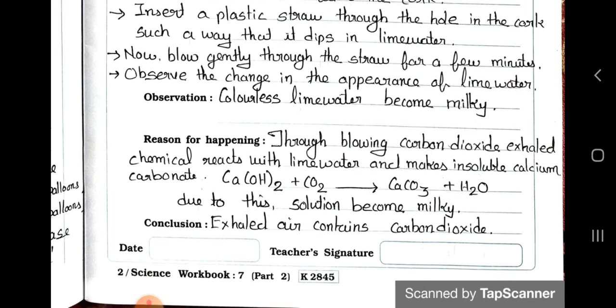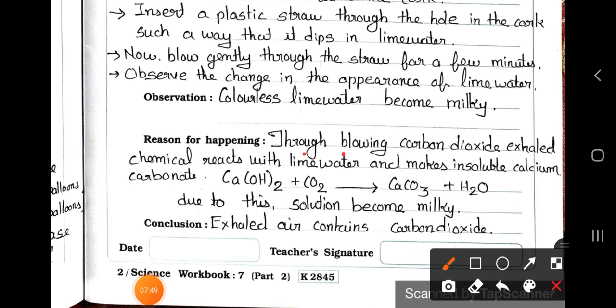See the reason for happening. Through blowing, carbon dioxide exhaled, chemicals react with lime water and makes insoluble calcium carbonate. Ca(OH)2 plus CO2 gives CaCO3. This Ca and this one O, so O twice is there, so Ca(OH)2. Here twice, and this one, so CaCO3 plus H2O. Due to this, solution becomes milky. And conclusion is: exhaled air contains carbon dioxide.